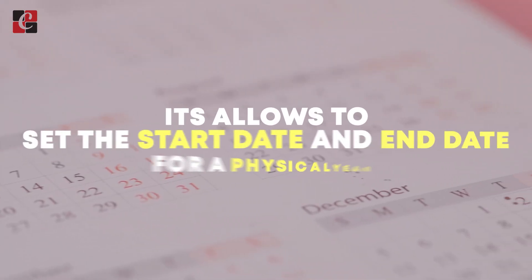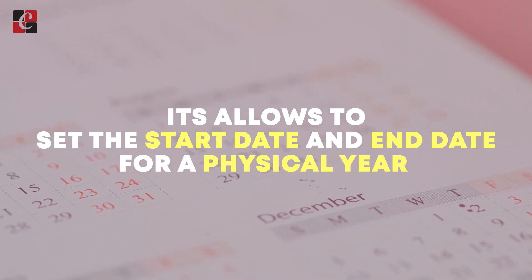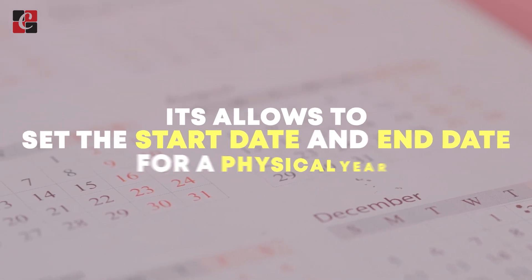In Odoo, the fiscal year is a fundamental concept used in an accounting period that allows you to set the start date and end date for a fiscal year. At the end of each quarter, the business closes their respective periods in Odoo using lock dates. When you set lock dates, you cannot make any further changes without proper authorization.